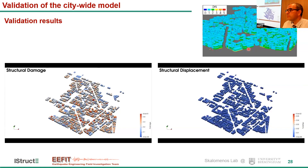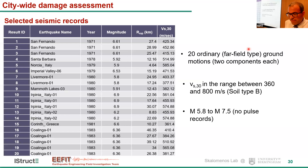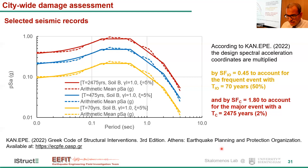Moving to the last part — the city-wide damage assessment. Having a validated model, we perform time history analysis with the platform for three hazard levels. We downloaded 20 ordinary far-field ground motions — two components each — from PEER, for soil type B in Thessaloniki, ignoring pulse records. According to the most modern Greek code for structural intervention from the Earthquake Planning and Protection Organization, we adopt two scale factors for the design basis event: a scale factor of 0.45 for the 70-year return period frequent event, and 1.8 for the 2,475-year return period rare event.